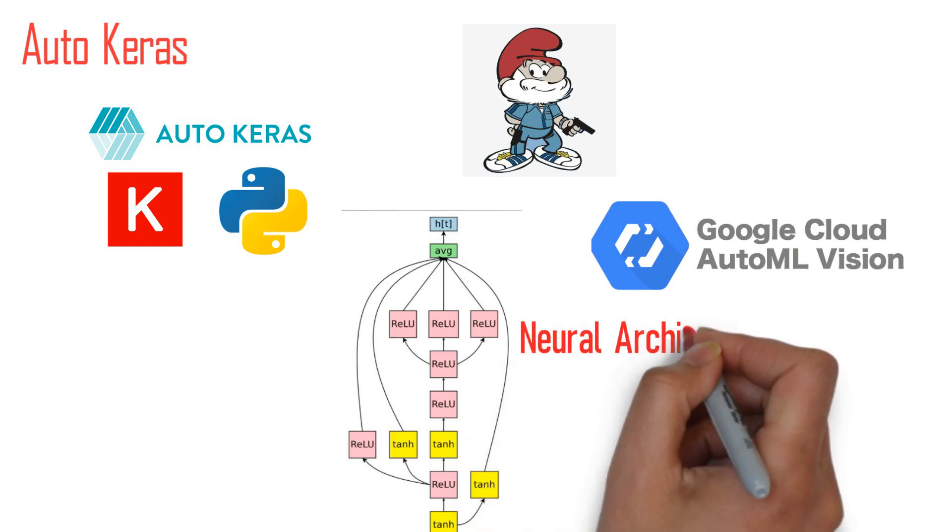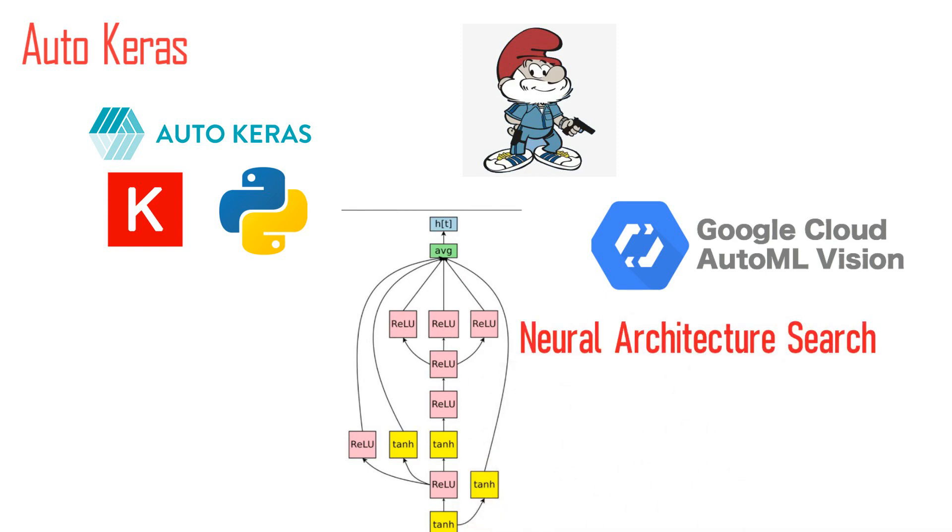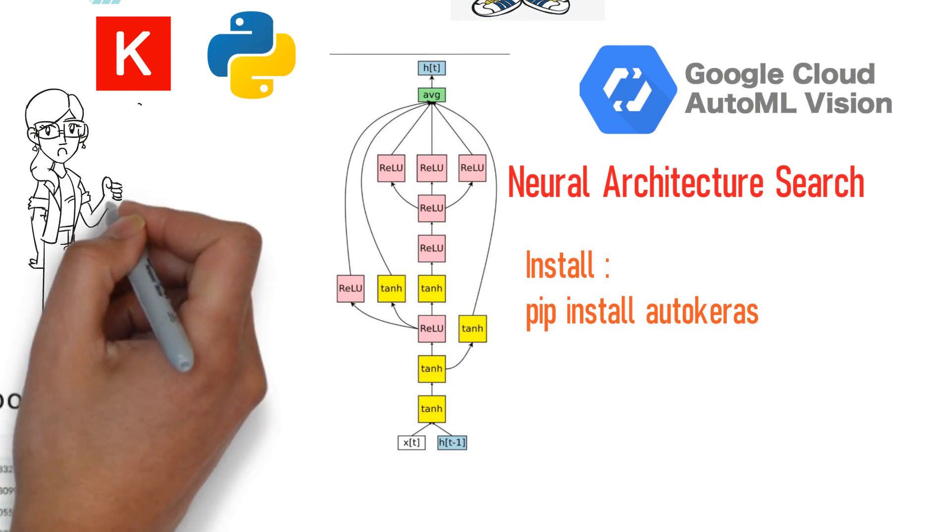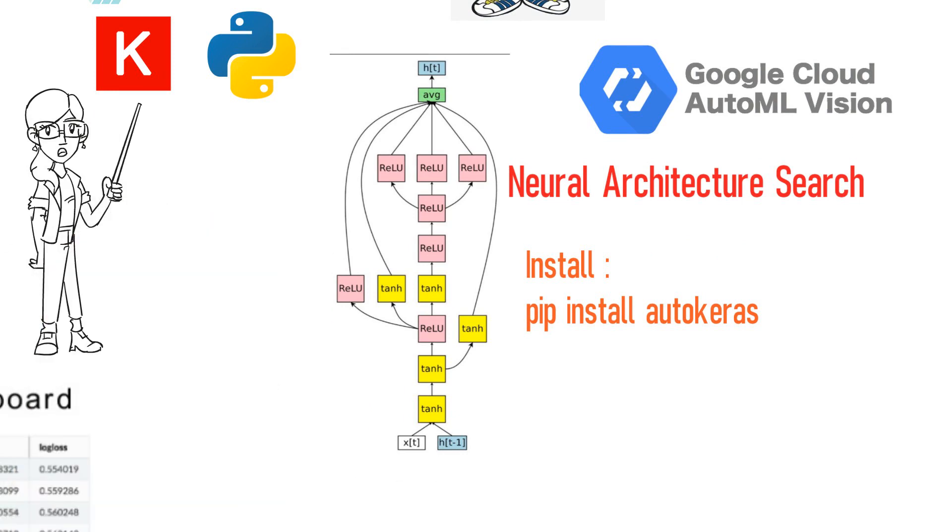AutoKeras uses an efficient and most recent version of neural architecture search. You can quickly and easily install the package with pip install AutoKeras. You're ready to do your own architecture search on your own dataset for free.